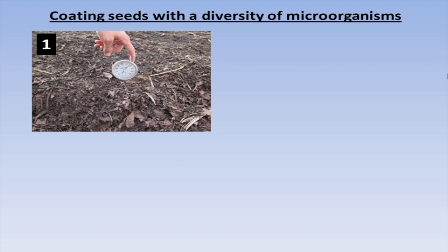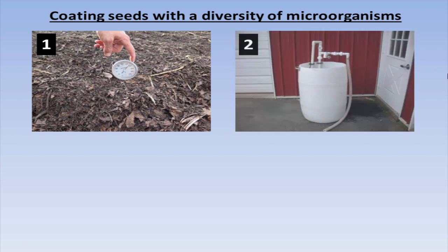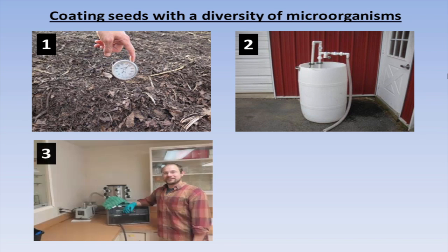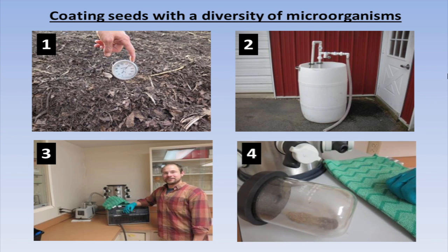Here are the general procedures: make your compost, put it through a brewer to make non-aerated compost extracts, freeze-dry it after a defined period. What's left is this powder. You get a very small amount — about 0.2 grams from 300 milliliters of liquid material. It's a very small return, but you could dust that over many seeds.